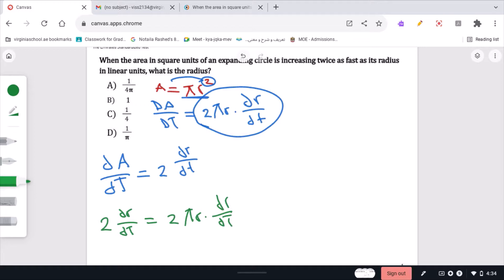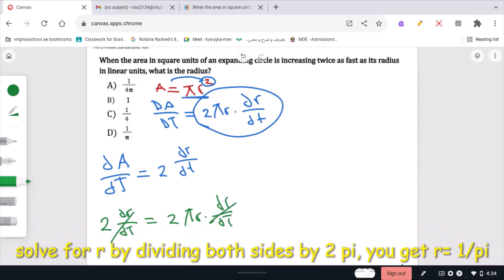Notice that dr/dt cancels out. You can bring the 2 pi over to the left hand side by division, and you get that the radius is equivalent to 1 over pi. So the correct answer is D.